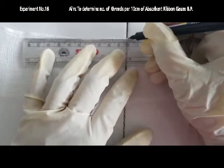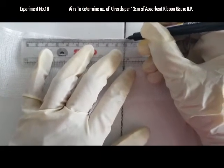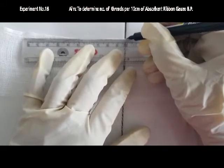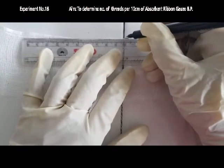Now in experiment number 18, the title is to determine the number of threads per 10 cm of absorbent cotton ribbon gauge BP.